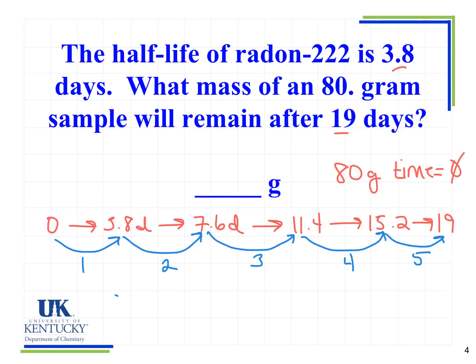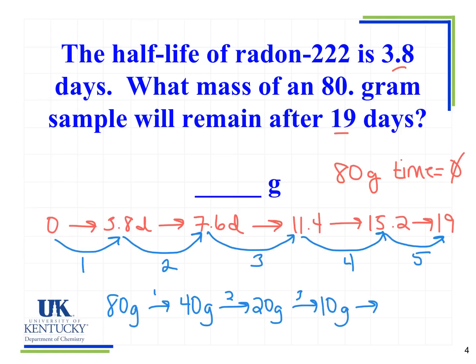Now we need to look at how much of our sample is actually left. We take our 80-gram sample and go through five half-lives. After the first half-life we'll have 40 grams; after the second, 20 grams; after the third, 10 grams; after the fourth, 5 grams; and after the fifth, we'll have 2.5 grams.